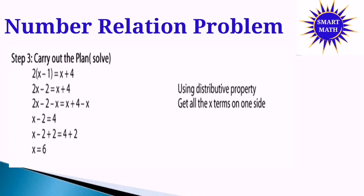Step 3: Carry out the plan or solve. Our equation is 2(x − 1) = x + 4. We use the distributive property: 2 times x is 2x, and 2 times negative 1 is negative 2. Then we copy x + 4 on the right side. We get all the x terms on one side: 2x − x = 4 + 2. Our answer is x = 6.